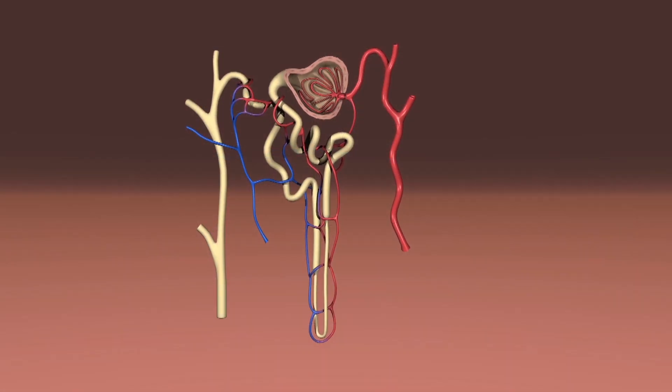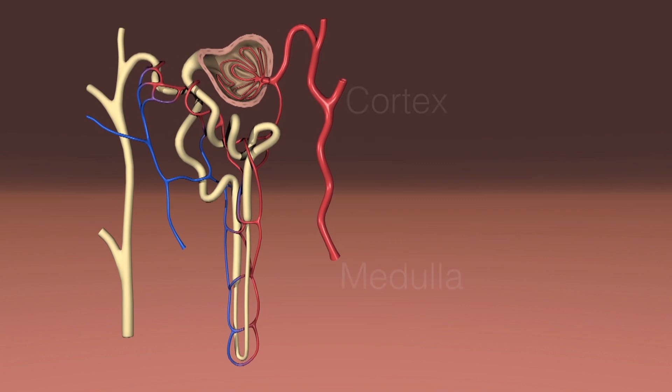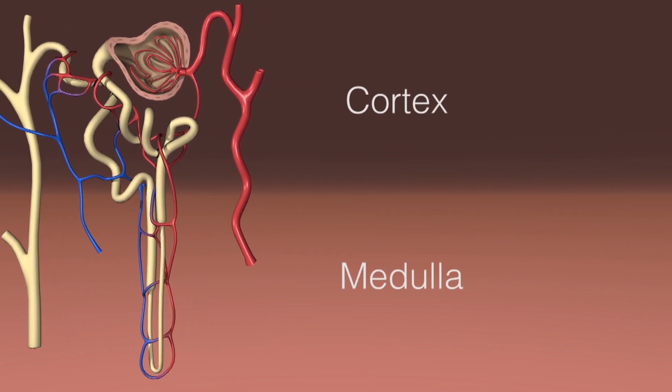For starters, I want you to think of the medulla as being very salty. In fact, at the bottom of the loop of Henle, the sodium concentration is about 300 milliequivalents per liter, which is double that of the blood. The loop of Henle has some special characteristics that explain why that is, and it's really all about saving energy.